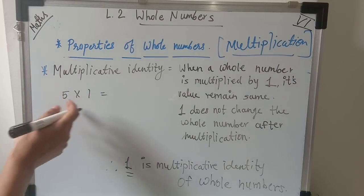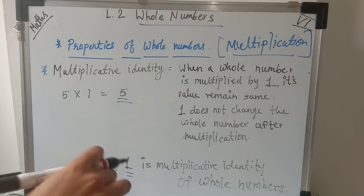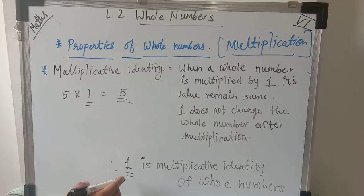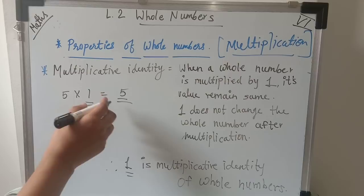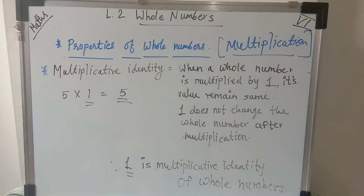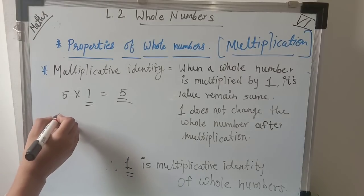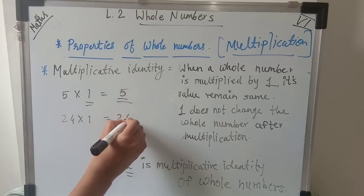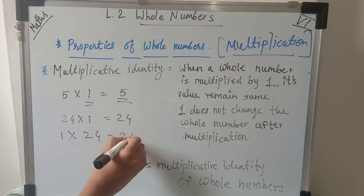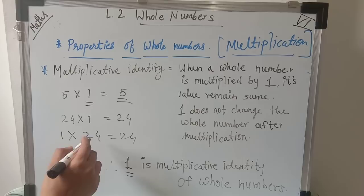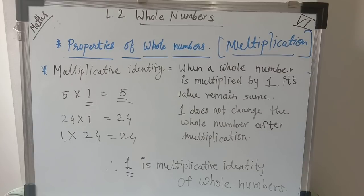For example, 5 × 1 = 5, and 24 × 1 = 24, or 1 × 24 = 24. In any order, multiplying any whole number by one gives the same number. So one is the multiplicative identity of whole numbers, and zero is the additive identity of whole numbers — there is a difference between both identities.